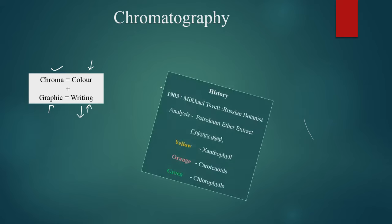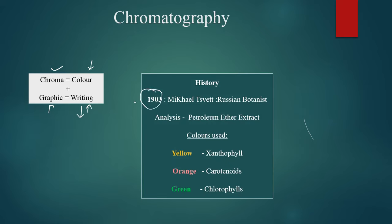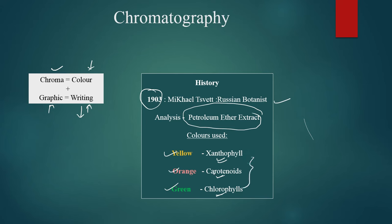If we talk about the history of chromatography, in 1903, Michael Tswett, who was a Russian botanist, first used chromatography with petroleum ether extraction. He separated components including xanthophyll, carotenoids, and chlorophylls, which appeared as different colors — yellow, orange, and green. So chromatography was first used by Michael Tswett in 1903.